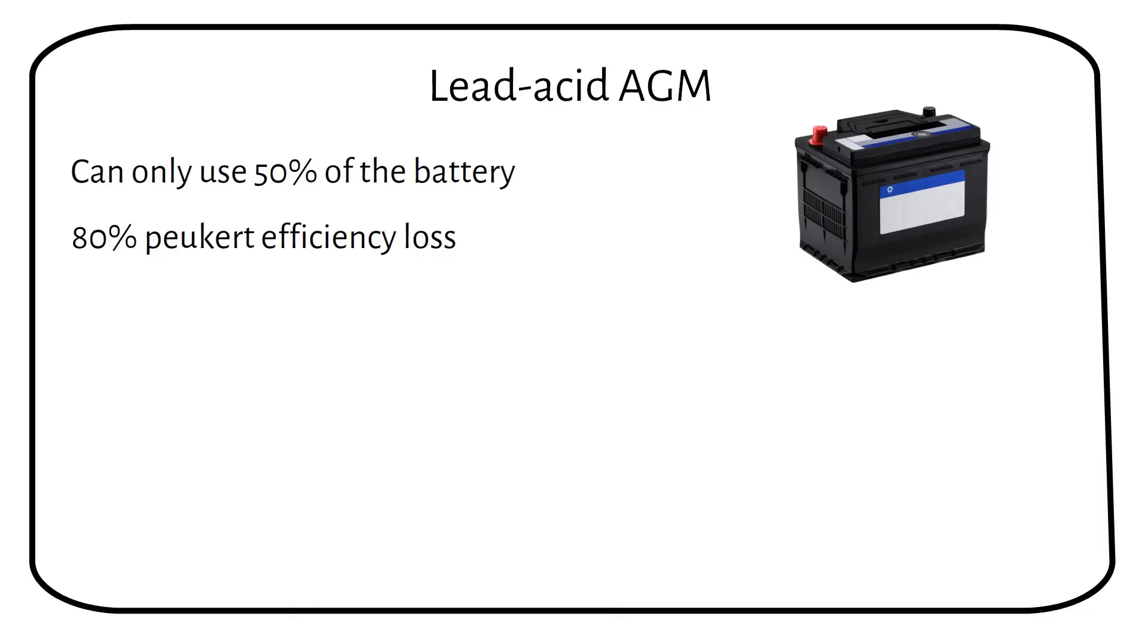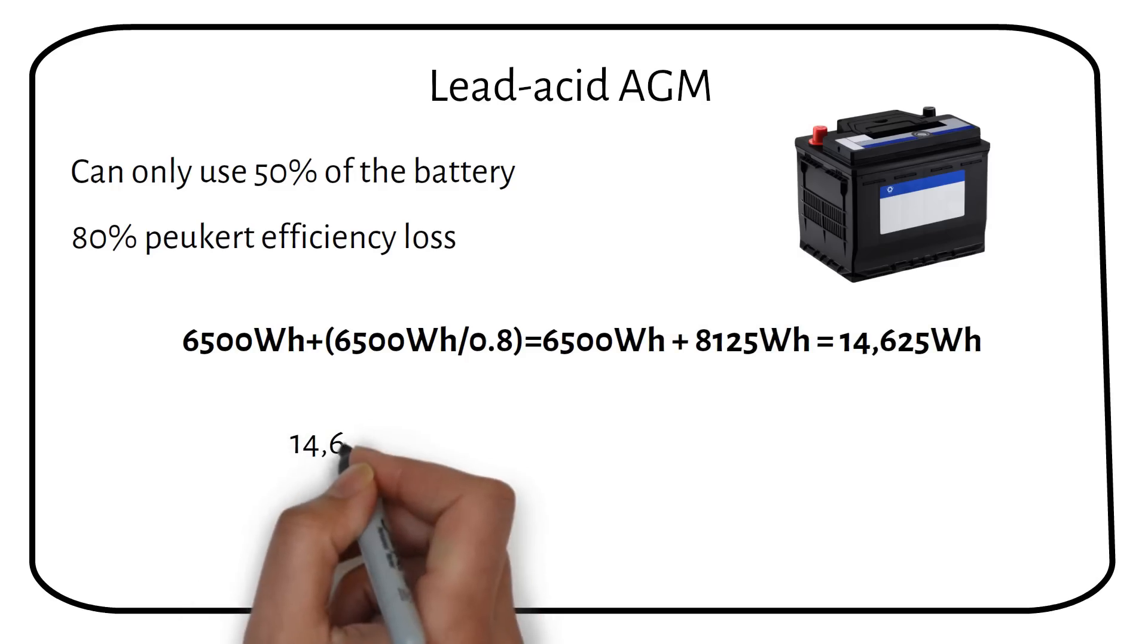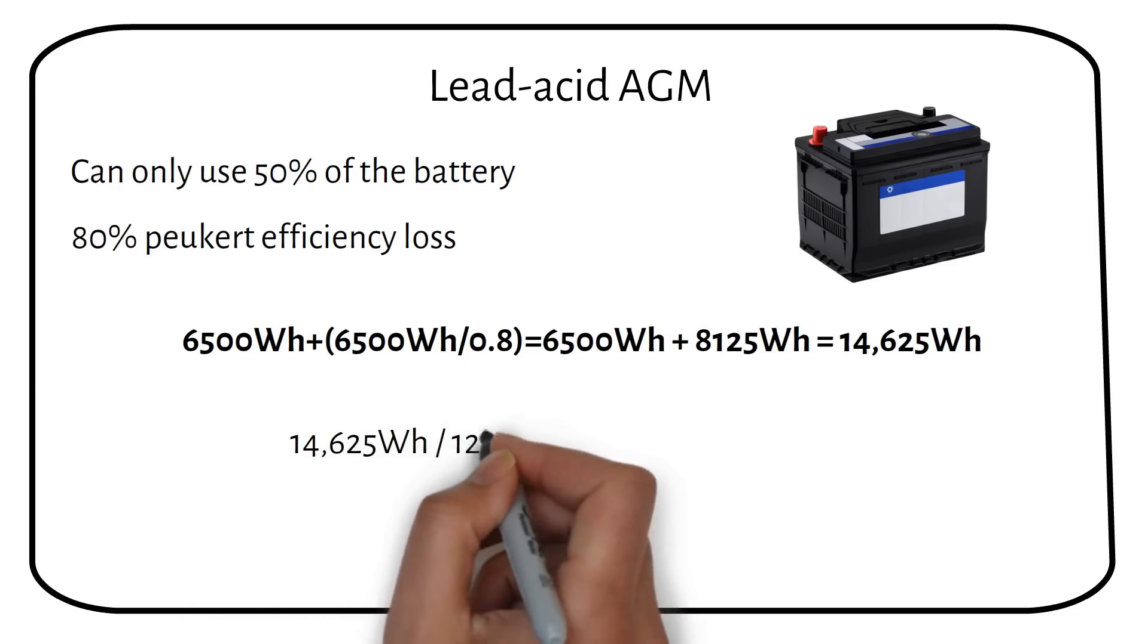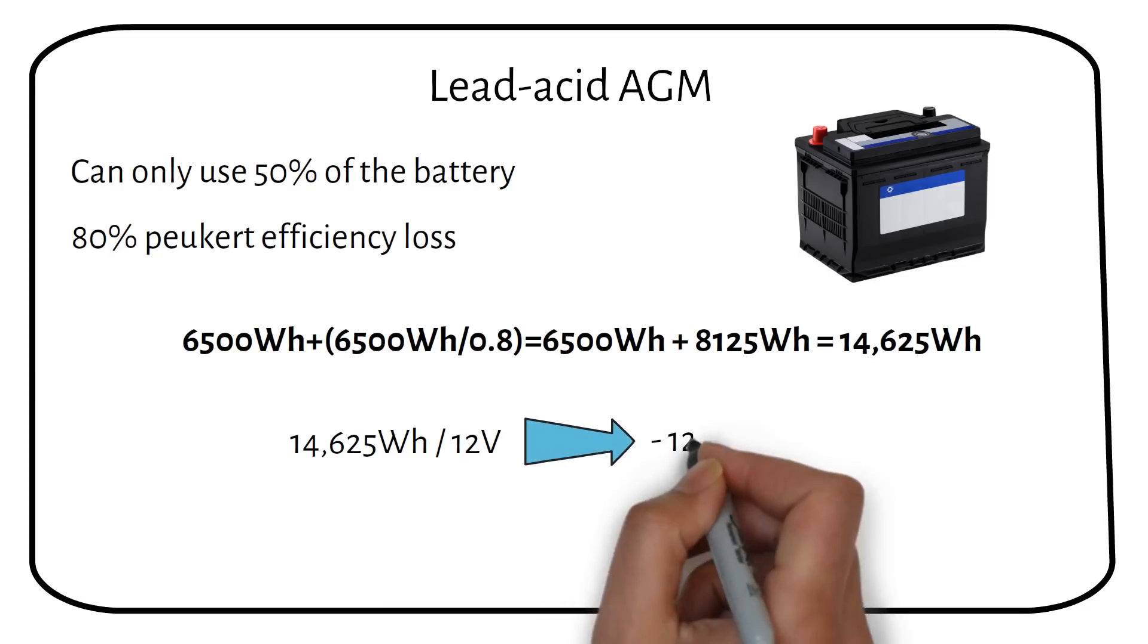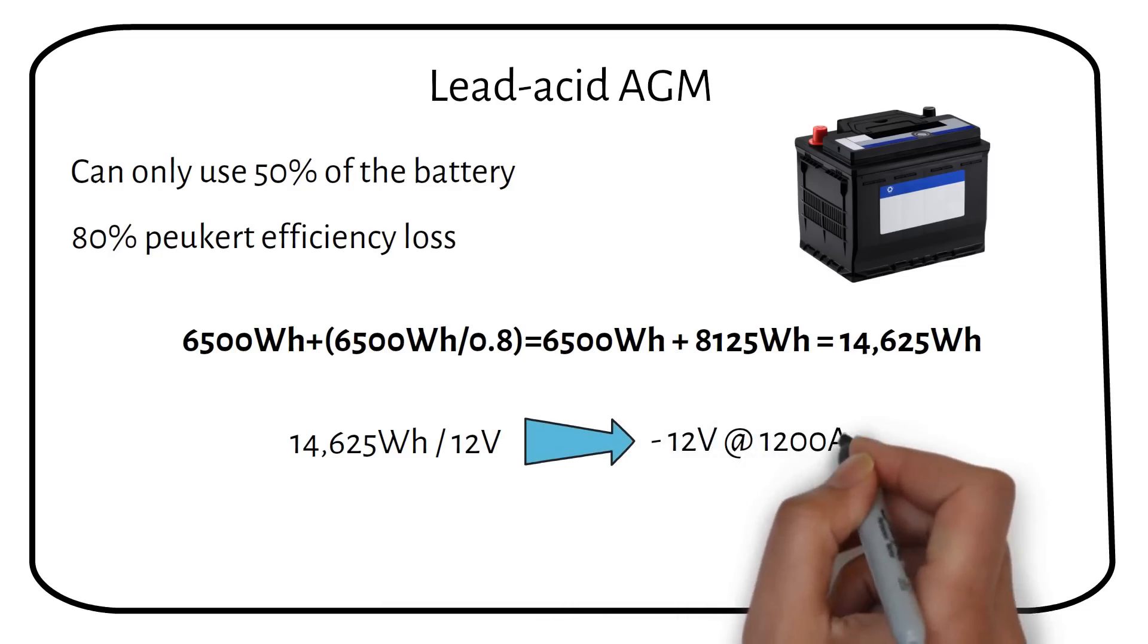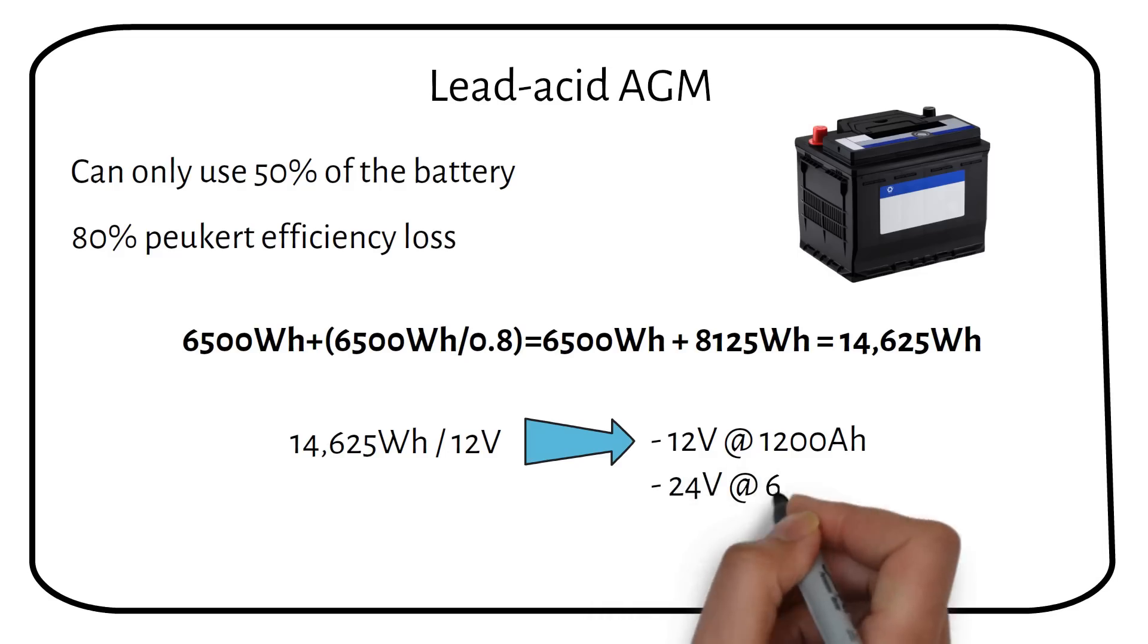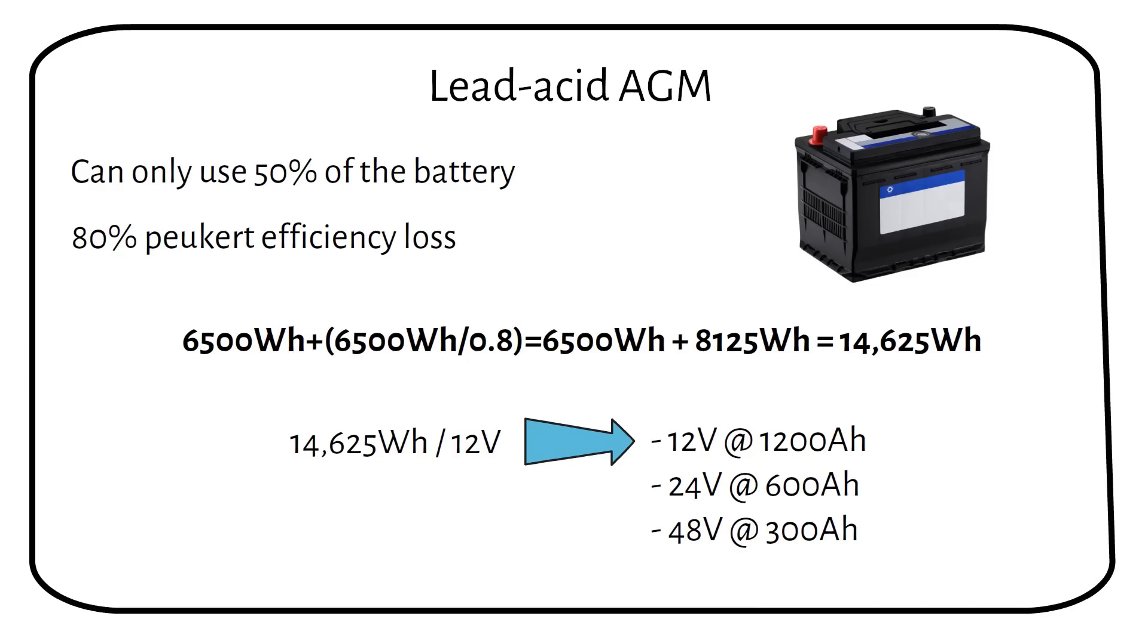This is 80% with a lead-acid AGM battery. We get a total capacity of 14,625 watt hours. Now if the battery is 12 volts, we would need a 1200 amp hour battery. And for a 24 volt battery, this becomes 600 amp hours. And a 48 volt battery, this becomes 300 amp hours.